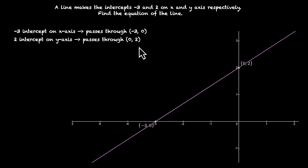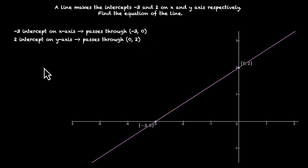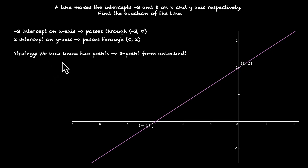We just figured out from the knowledge of intercepts that this line passes through these two points. And once we know two points, we can use two point form, or we can even find the slope and use the slope point form to get the equation. So a lot of new ways unlock for us once we have these two points. We now know two points, so the two point form is unlocked.